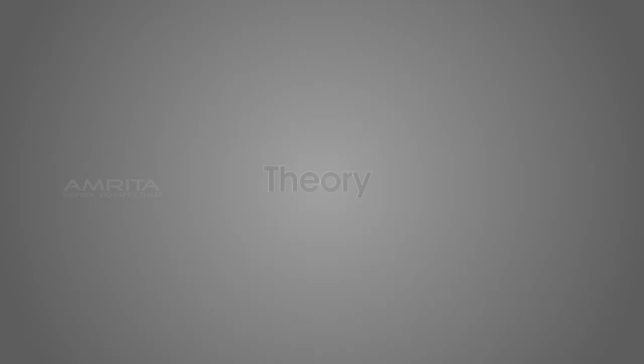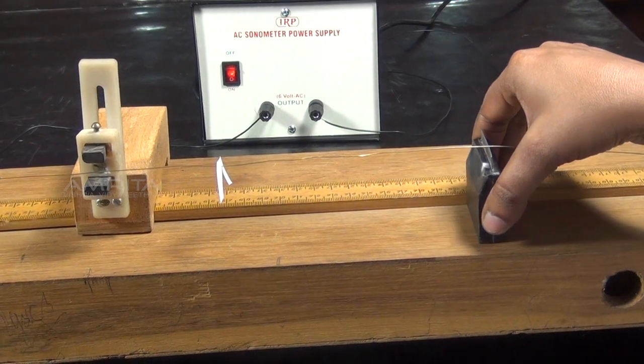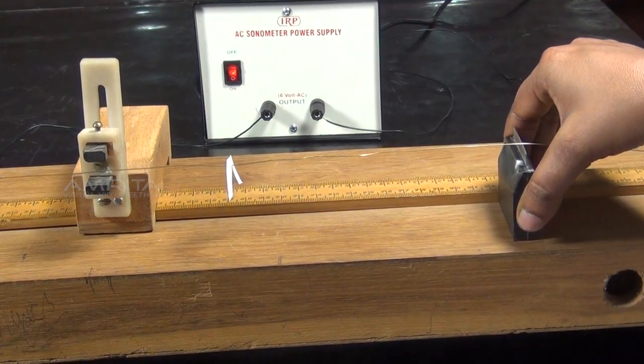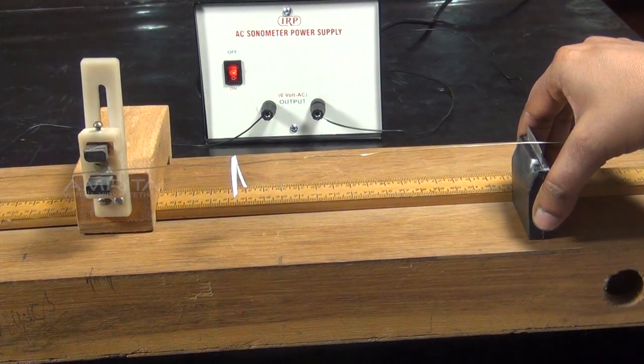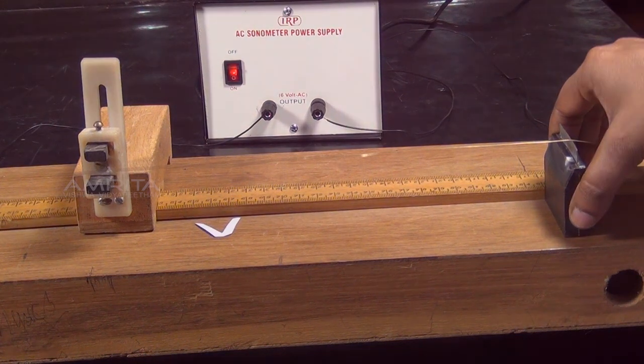Theory. When the length L of the sonometer wire vibrates with maximum amplitude, the frequency of the applied AC is equal to the natural frequency of the wire. Therefore, frequency of AC ν is equal to 1 by 2L into root of T by M.